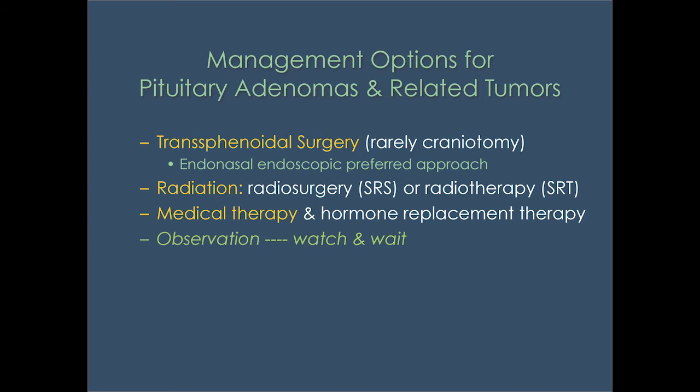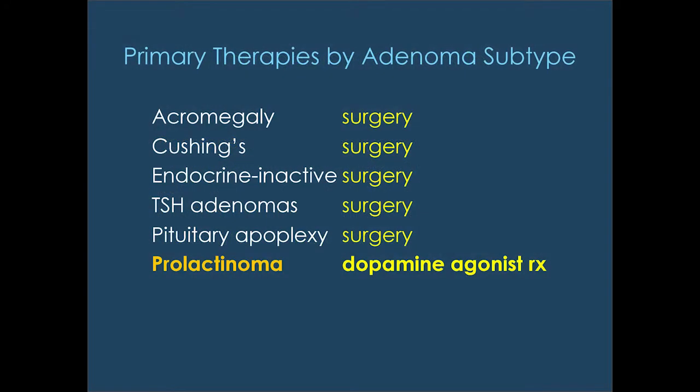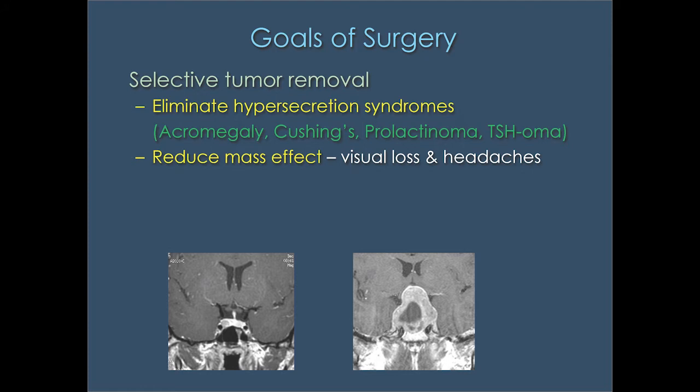Many people get MRIs for other reasons now and incidentally find small lesions — what we call incidentalomas — that we don't operate on. For pituitary adenomas, surgery is the mainstay for all major subtypes except prolactinomas. Prolactinomas are treated initially with bromocriptine or cabergoline with a very high success rate. For all other subtypes, including pituitary apoplexy — bleeding into a tumor — surgery is the first-line therapy.